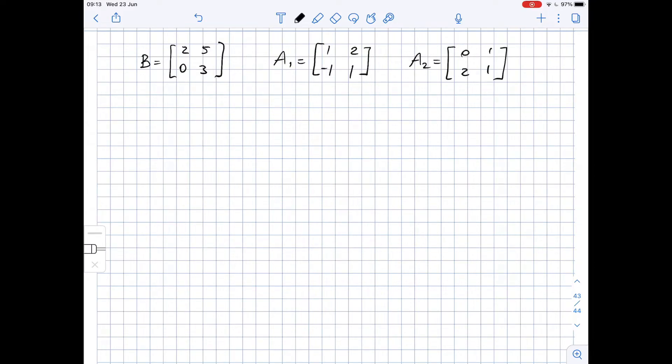So that means that we need to write down that B equals some C1 times A1 plus C2 times A2. C1 and C2 are some constants here.